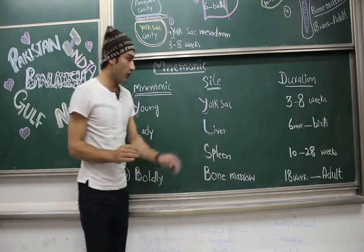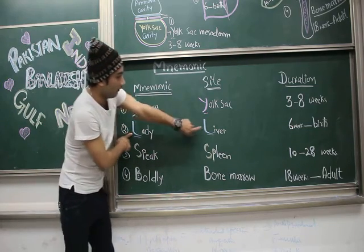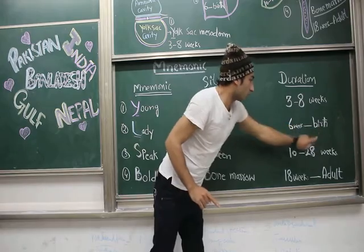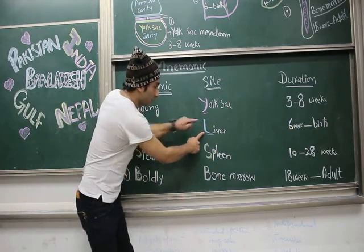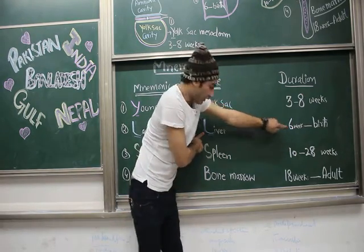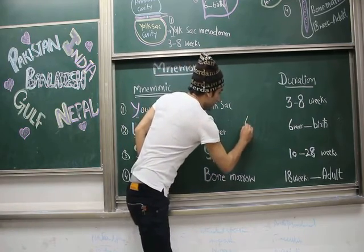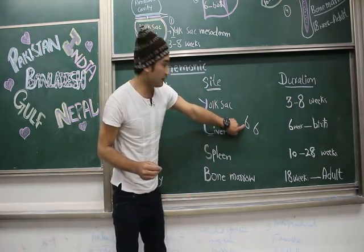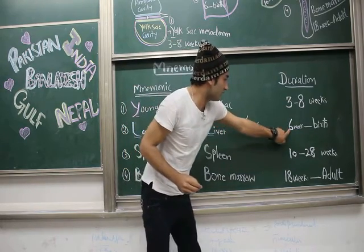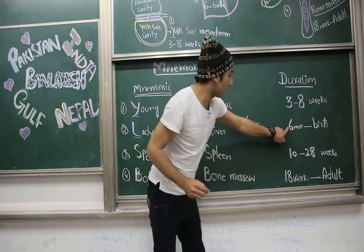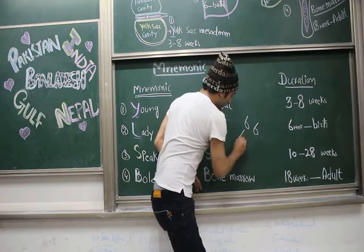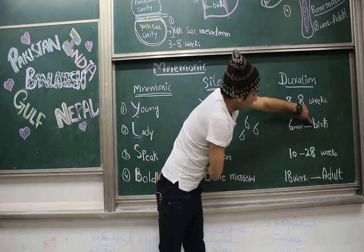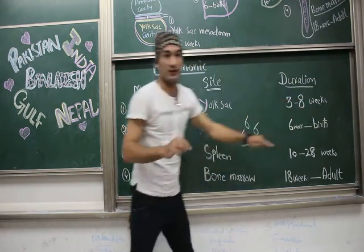From 'L' in Lady you remember Liver. The duration is from six weeks to birth. How to remember: the letter L is very similar to the number six — just rotate it slightly and it becomes a six. And that six is very close in shape to the letter B, so from six weeks to Birth. That is how you remember the liver.